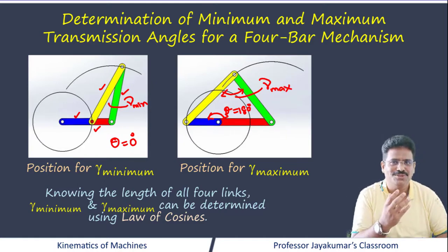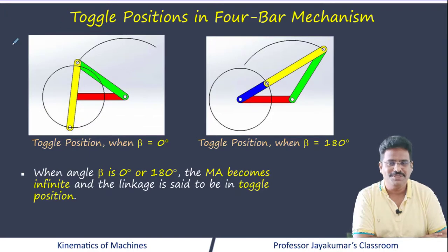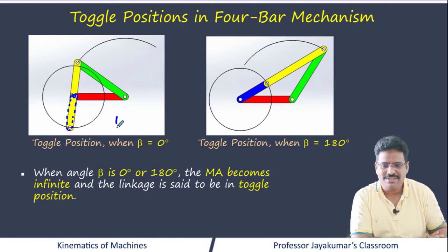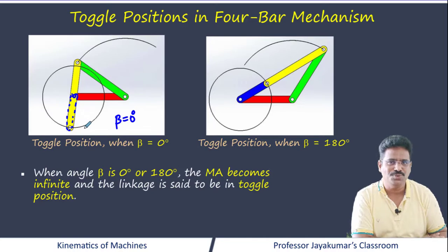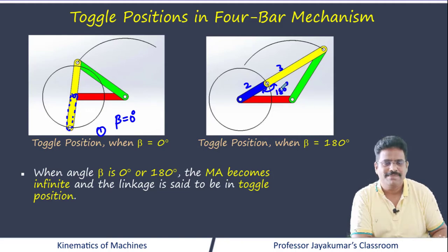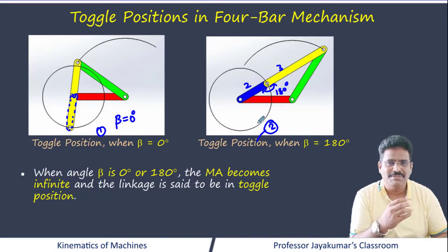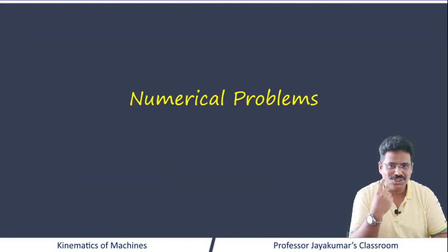We should also know the two toggle positions in a 4-bar mechanism. When the angle beta is 0 degrees — the angle between link 2 and link 3 is 0 degrees — we obtain toggle position 1. When the angle between the crank and the coupler is 180 degrees, that results in toggle position 2. We know that at a toggle position the mechanical advantage is infinite. So minimum and maximum transmission angle positions and two toggle positions give us four important positions of the 4-bar mechanism we must remember.